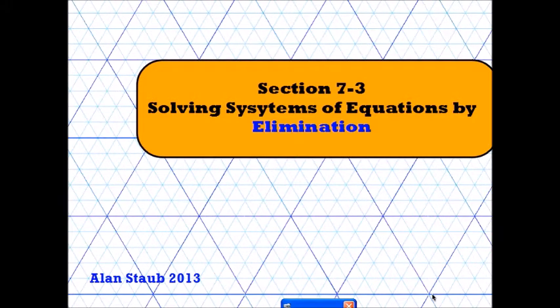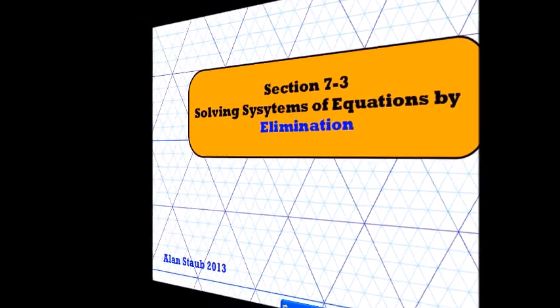Today we're going to look at solving systems of equations by elimination. We've already learned how to solve them by graphing and by substitution, so you already understand the whole idea of what it means to solve a system of equations and to come up with an ordered pair that is the solution to both equations. So we'll just look at a few examples and how to solve them by elimination.